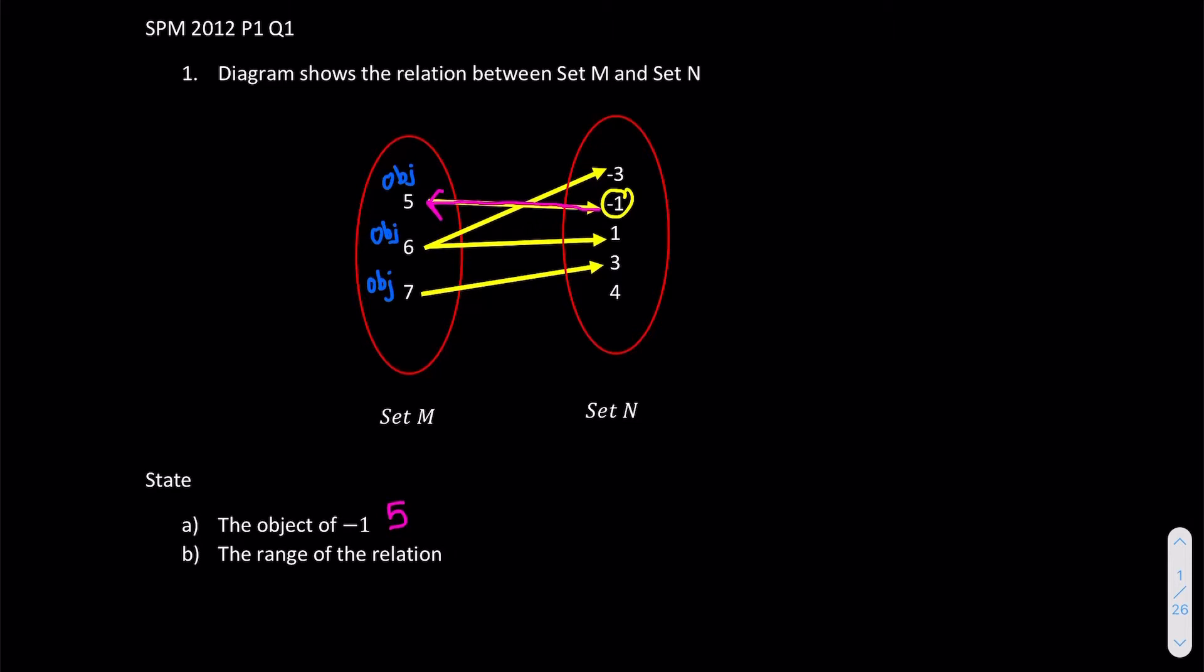Next thing, they're asking us for the range of the relations. So when they ask for a range, it's eventually a group, just remember, it's a set. So it's a set of the things inside the co-domain that have partner. So we go for co-domain and see who have partner. Negative 3, do we have partner? Yes. Negative 4 yes, 1 yes, 3 yes, but 4 has no partner.